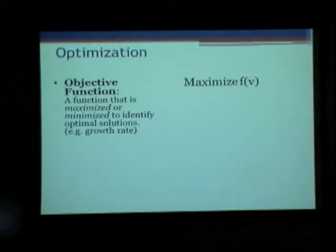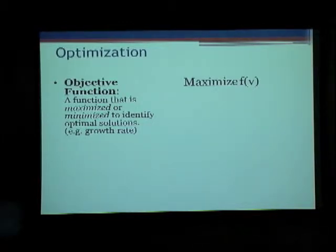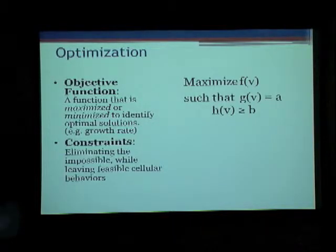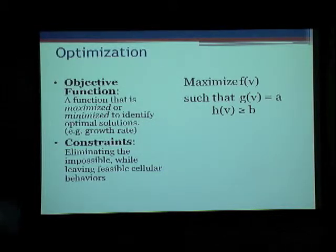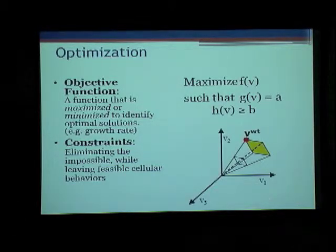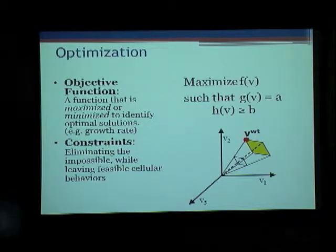How do we go about analyzing these networks? We do optimization through linear programming. In optimization, we have an objective function — a function that is maximized or minimized to identify the optimal solutions. In our case, we would either maximize the flux or a function of the flux. We also apply constraints to eliminate solutions which would not make sense, which are infeasible, while leaving the feasible behaviors. We would get a result like this where the yellow space represents the feasible solutions and the red dot is the optimal solution for the specified problem.